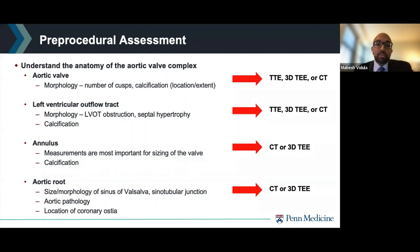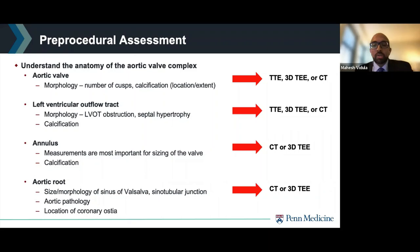The annulus must be very carefully measured, since these measurements are most important for sizing of the valve. Specifically, we're very interested in the annular perimeter, area, and diameter. CT or 3D TEE is typically used for these measurements. The aortic root must also be measured carefully and examined for any underlying aortic pathology. Furthermore, the location of the coronary ostia must be identified, and the height of the coronary ostia from the annulus must be known to determine the risk of coronary occlusion. A low coronary height — typically less than 12 millimeters — increases the risk for coronary occlusion. CT or 3D TEE are required for accurate measures of this parameter.